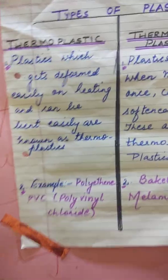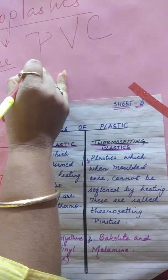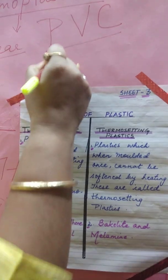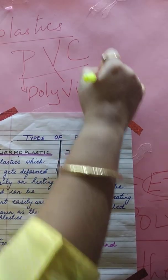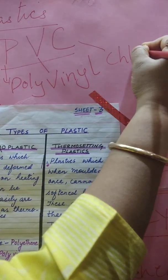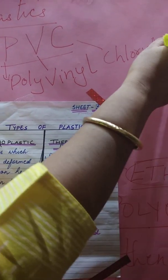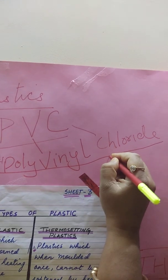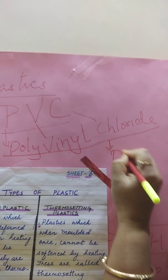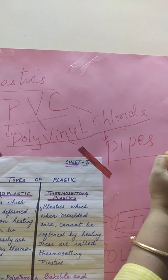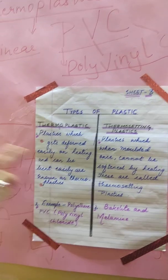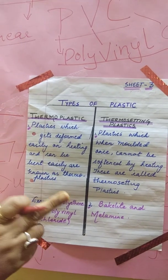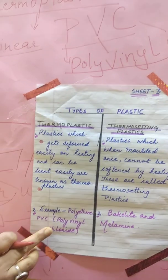There are different shapes of polythene you can see in the market. Another example is PVC. P means poly, V means vinyl — V-I-N-Y-L — and C means chloride. So the full name becomes polyvinyl chloride. PVC is used to make plastic pipes. So thermoplastics are plastics which can be easily deformed on heating, can be given any shape, arrangement is linear, and common examples are polyethylene and PVC.